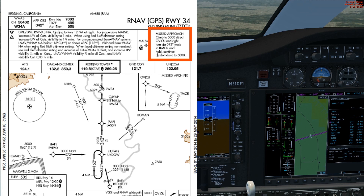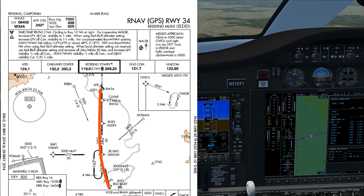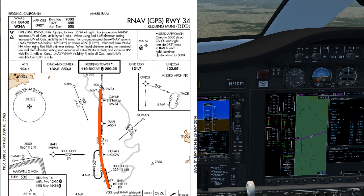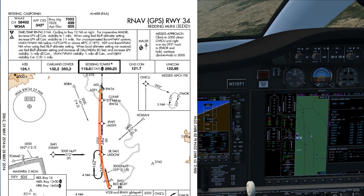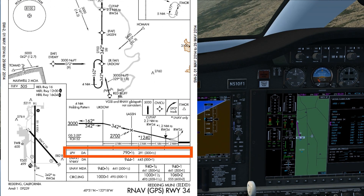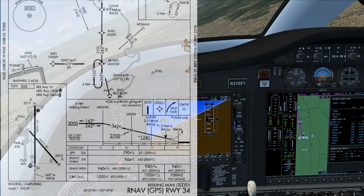You can also see the instructions for the missed approach: climb to 5,000 feet direct to the OVIC intersection, a right turn to a 093 track, and then hold at 5,000 feet. We initially fly over the Red Bluff VOR on our instrument approach fix, or IAF. From there we have direct Ukdao — Uniform Kilo Delta Oscar Whiskey — then join the final approach course to Lastin, our final approach fix, the FAF. From there we activate vectors to final on the G1000 and fly straight down to the runway using the glide path on the LPV approach, which gives us minimums of 790 feet barometric or 300 feet AGL.